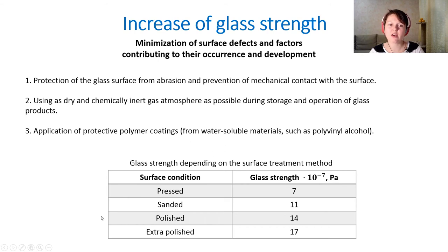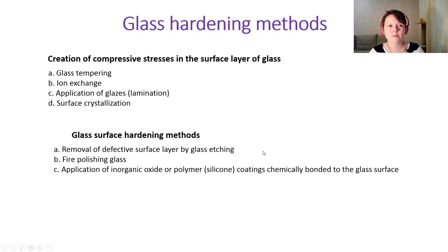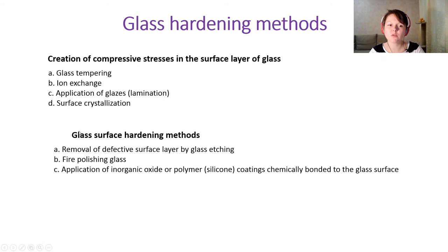Different glass strengths result from different surface conditions. Glass strength increases through pressing, grinding, polishing, and extra polishing. Glass hardening methods that create compressive stresses in the surface layer include glass tempering, ion exchange, application of glasses causing lamination, and surface crystallization. Surface hardening methods include removal of the defective surface layer by glass etching, fire polishing, or application of inorganic oxide or polymer coatings.